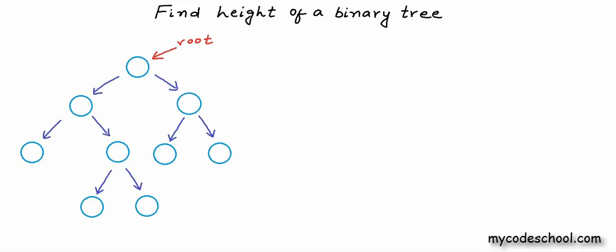First of all, I have drawn a binary tree here. I have not filled in any data in the nodes. Data can be anything. Binary tree as we know is a tree in which each node can have at most two children. So a node can have 0, 1 or 2 children.